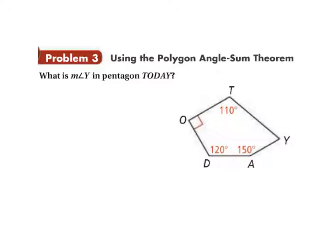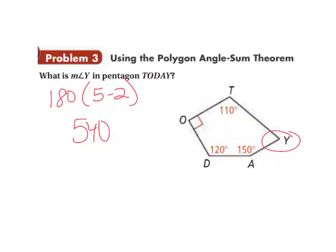Let's try using that knowledge on this polygon here — it is not regular, but the angle sum should still add up to the same thing. Counting the sides: 1, 2, 3, 4, 5 sides — this is a pentagon. Using the angle sum formula: 180 times (5 minus 2) is 180 times 3, which is 540. That's what all the angles are supposed to add up to. To find angle Y, I take 540 and subtract all the other angles: 540 minus 150 minus 120 minus 90 minus 110. That gives the measure of angle Y equaling 70 degrees.